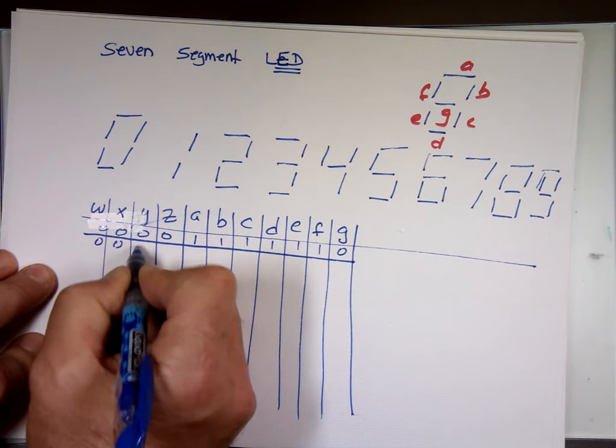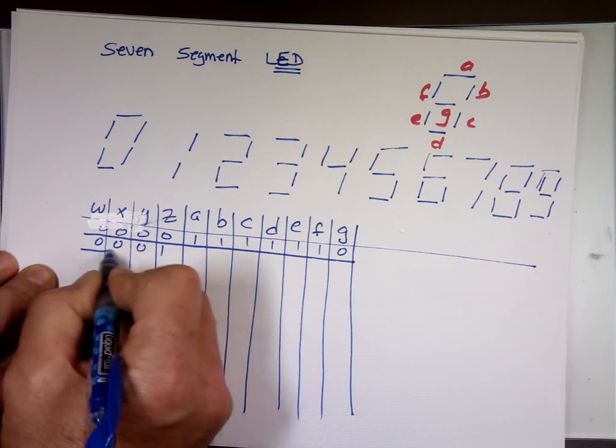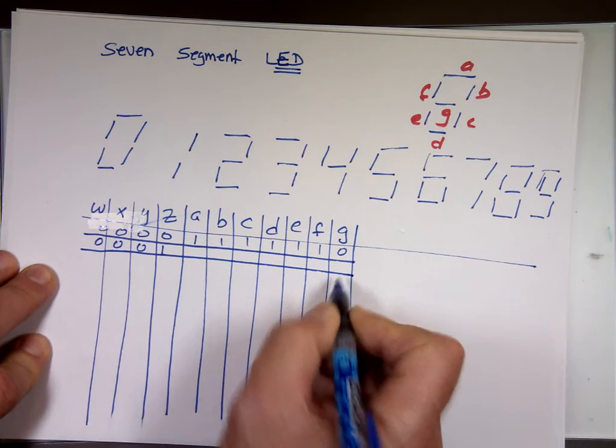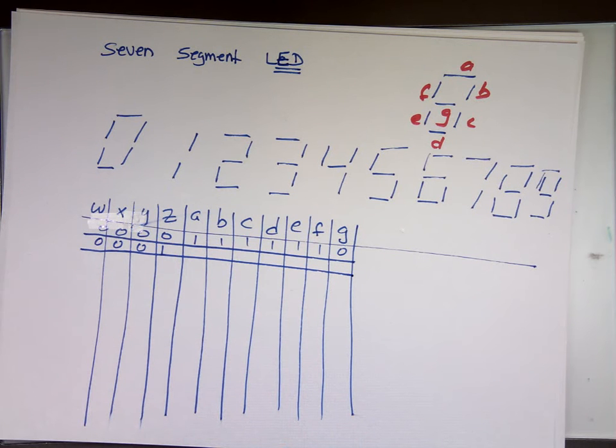If your inputs are 0, 0, 0, 1, that's equivalent to number 1. Now again, we're going to decide if you type in 1, do you want it B and C or E and F? Which one? You're the designer. B and C. B and C? Okay.